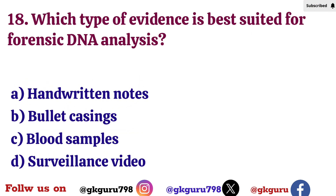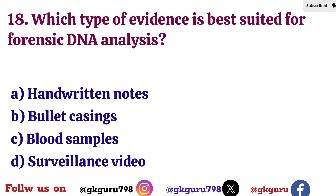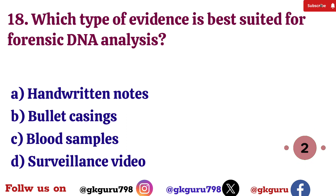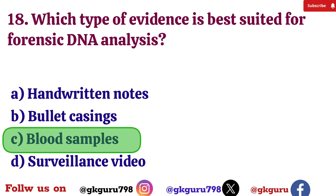Eighteenth question: Which type of evidence is best suited for forensic DNA analysis? Option A: Handwritten notes. Option B: Bullet casing. Option C: Blood samples. Option D: Surveillance video. Correct answer: Option C — Blood samples.